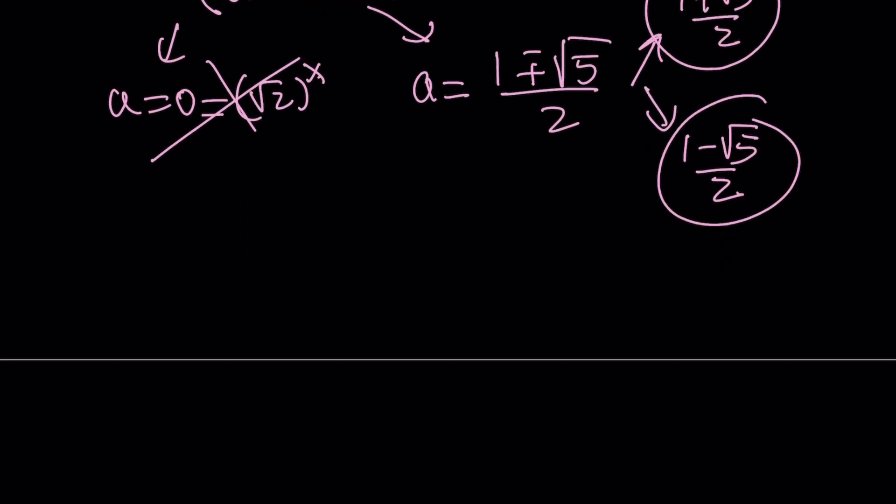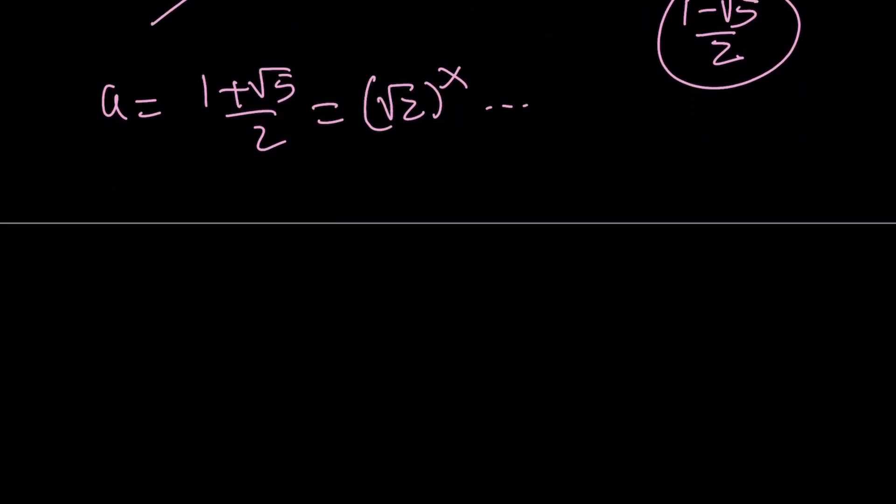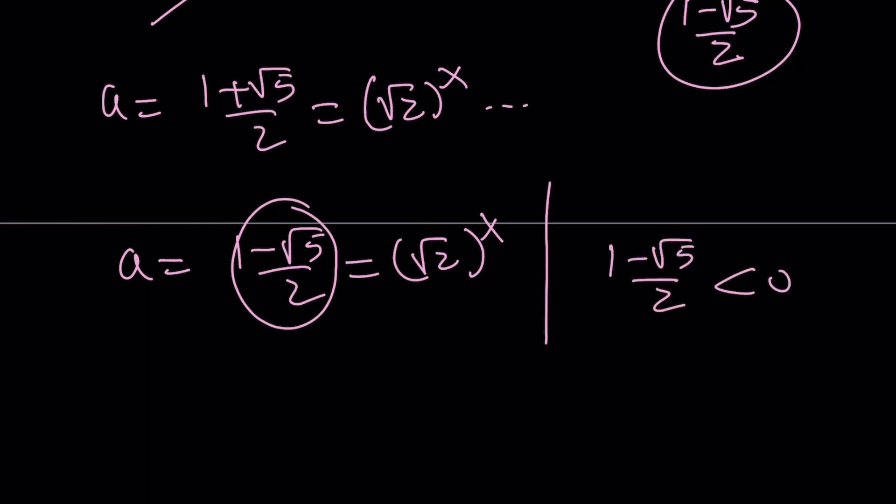Let's go ahead and take a look at each one. So if a is equal to 1 plus root 5 over 2, that means it's equal to square root of 2 to the power of x. So we're going to get some solutions from here. But let's go ahead and take a look at the second one. That is 1 minus root 5 over 2. And if this is the case, then we have a problem. Because 1 minus root 5 over 2 is less than 0. And square root of 2, any power of square root of 2 cannot be negative.